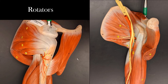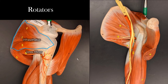The supraspinatus is above the spine of the scapula, and the infraspinatus is right below it. Below the infraspinatus is the teres minor. You can see they're both inserting very close to each other on the head of the humerus, which is why they're both responsible for lateral rotation.